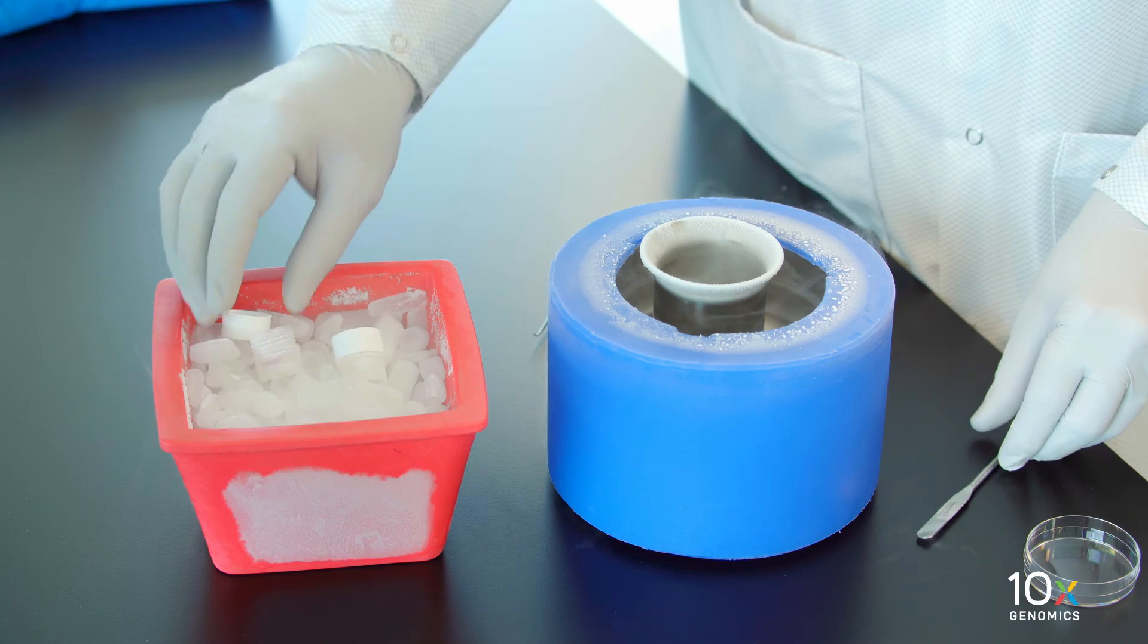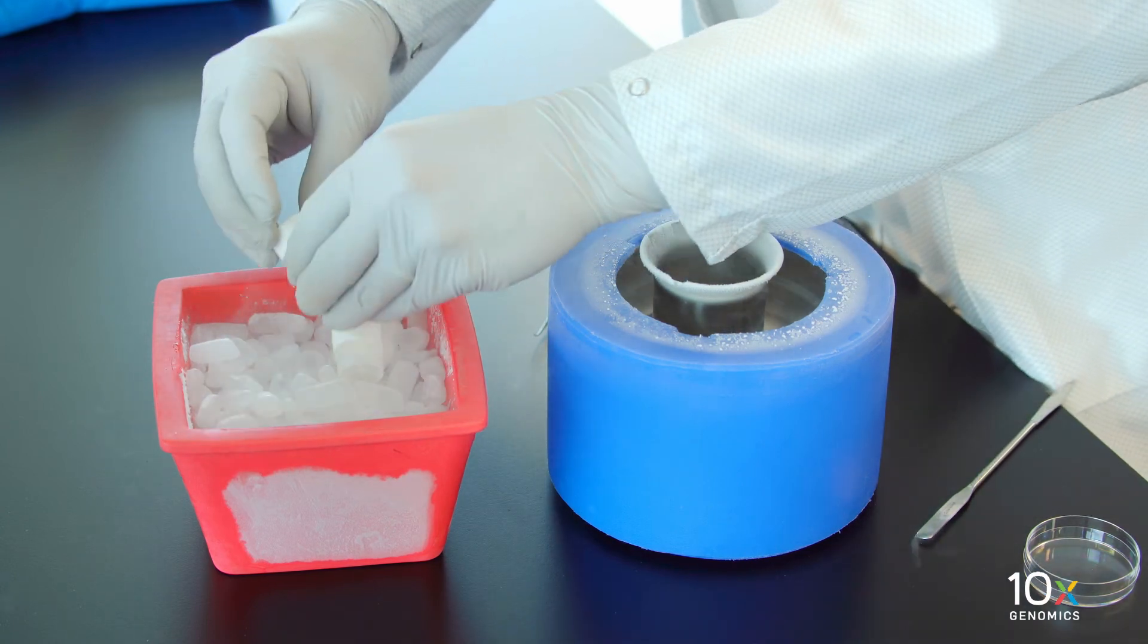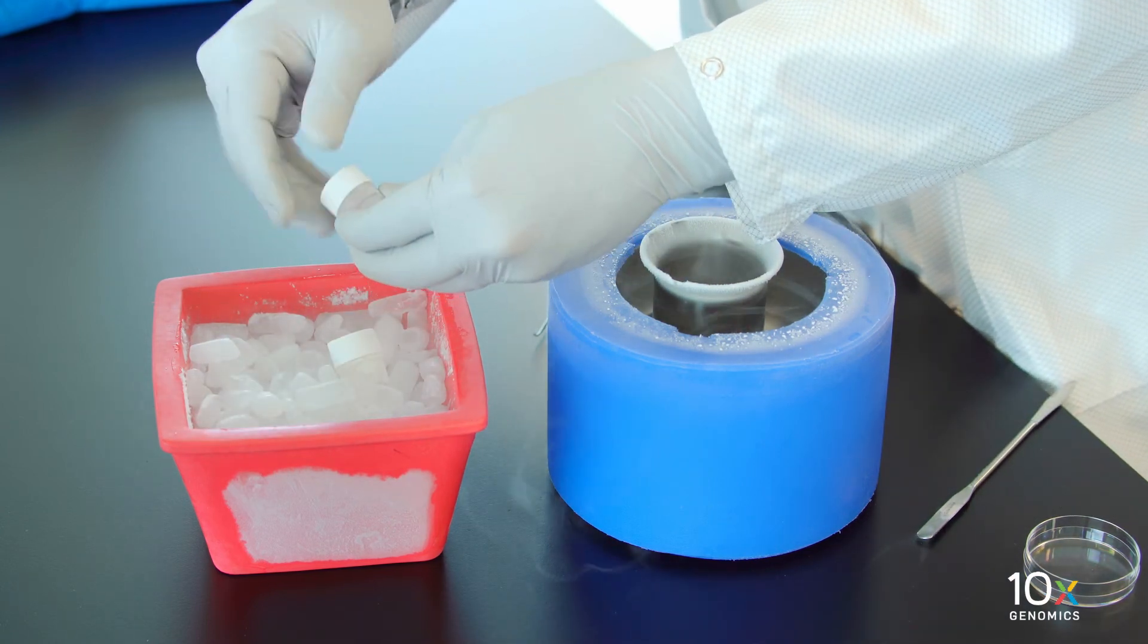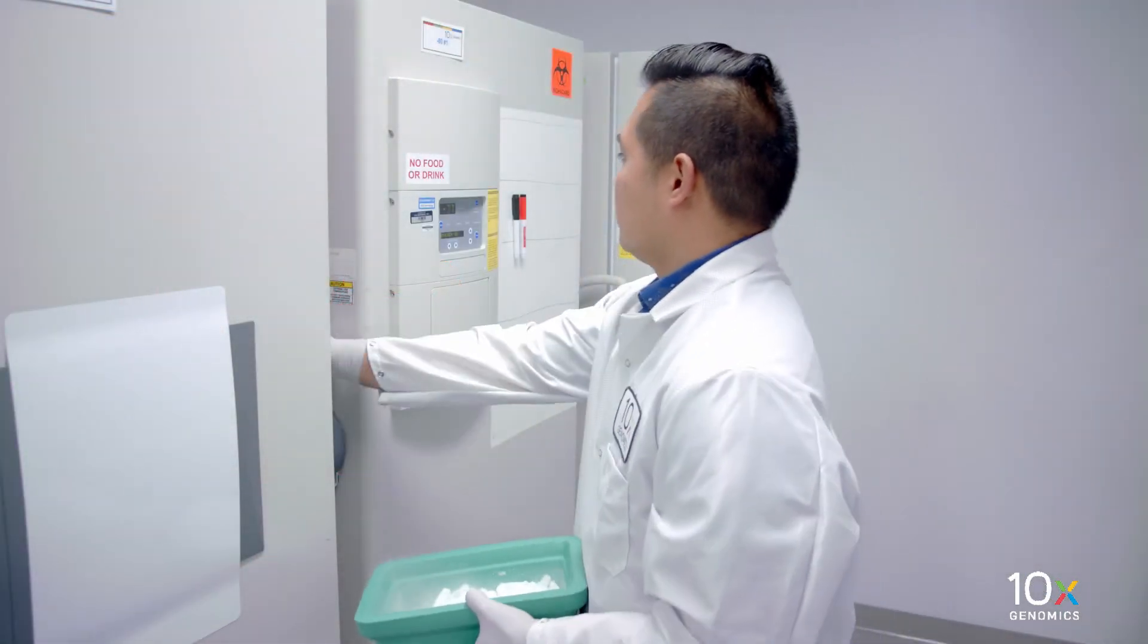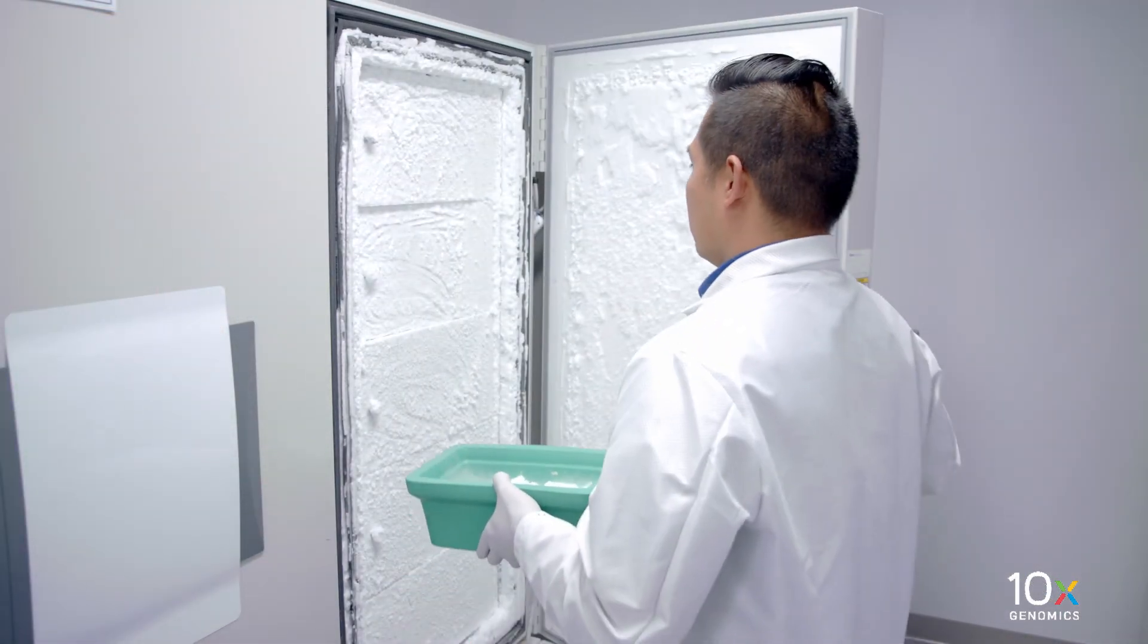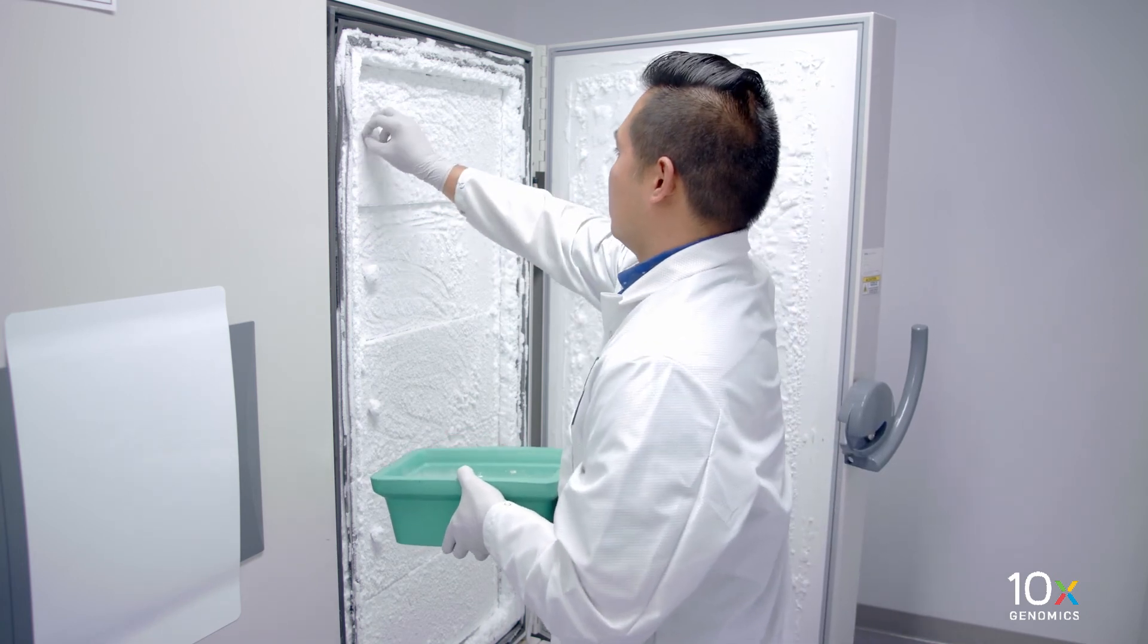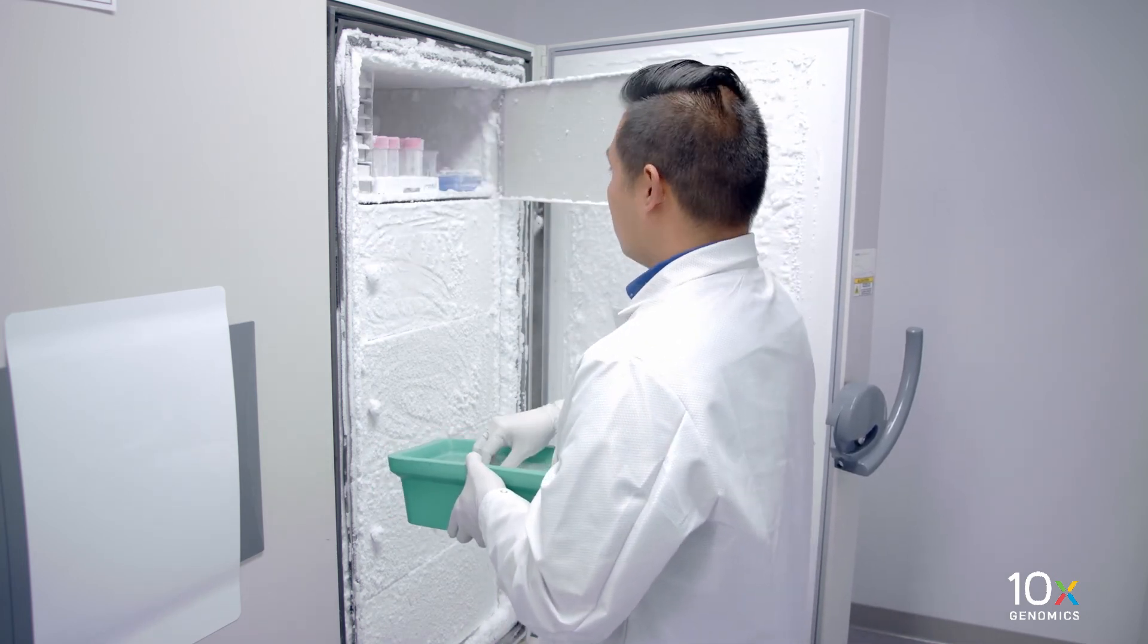To prevent evaporation and dehydration of the tissue sample, snap frozen tissue sample must be stored in a sealed container. Store frozen tissue at minus 80 degrees Celsius for long-term storage or immediately proceed to frozen tissue embedding.